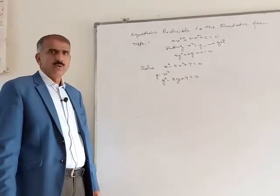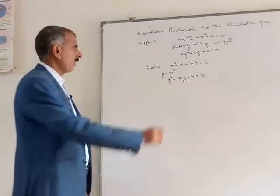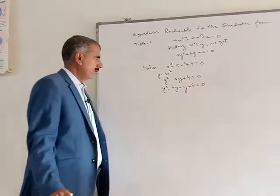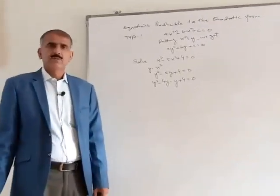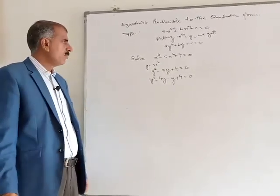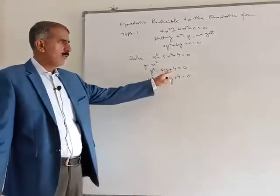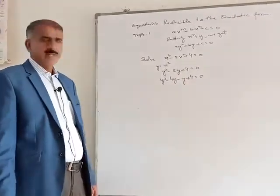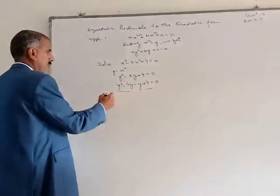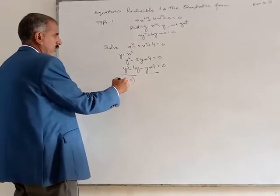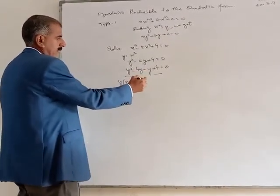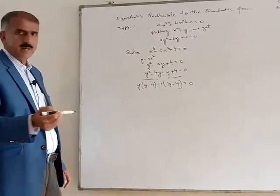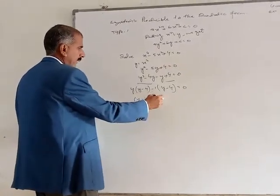The factors of 4 that give a middle term of 5 are 4 and 1. So we write: y squared minus 4y minus 1y plus 4 is equal to 0, giving y(y minus 4) minus 1(y minus 4) is equal to 0.